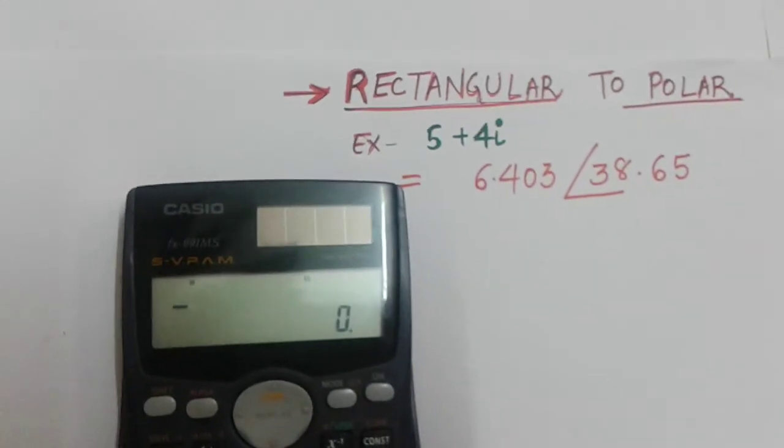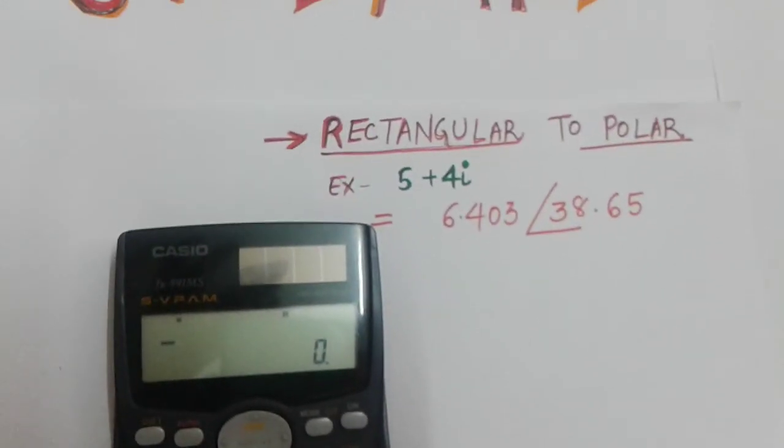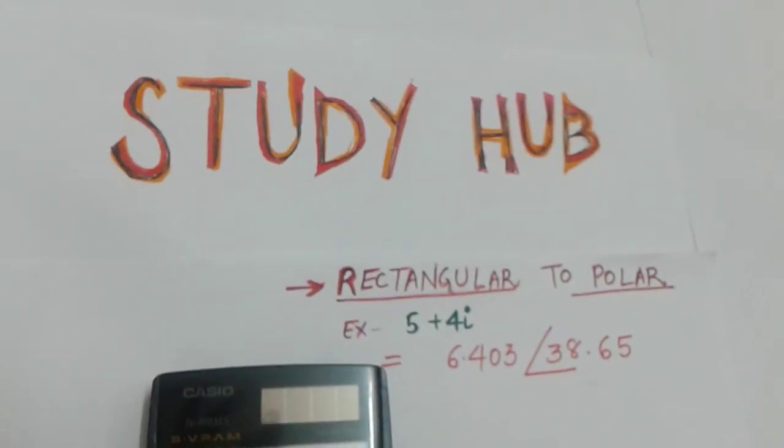how to convert the polar form into the rectangular form. Thanks for watching.